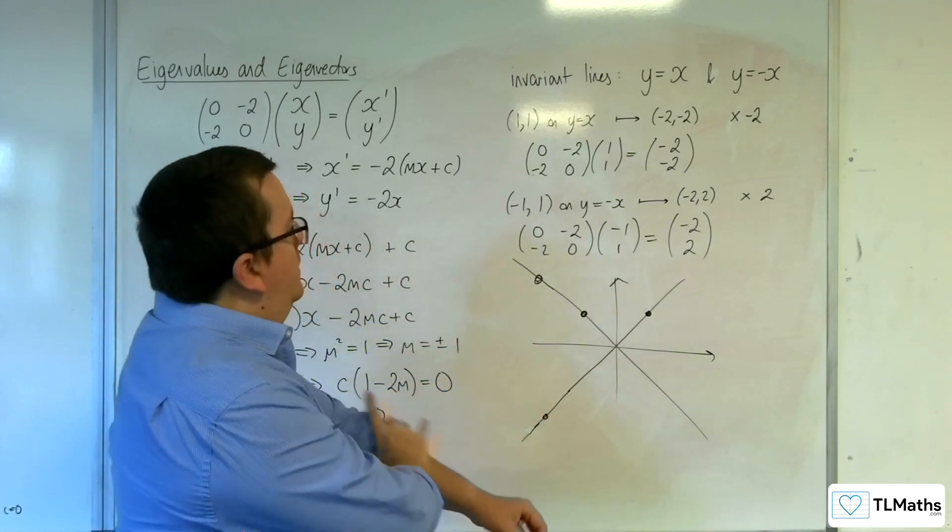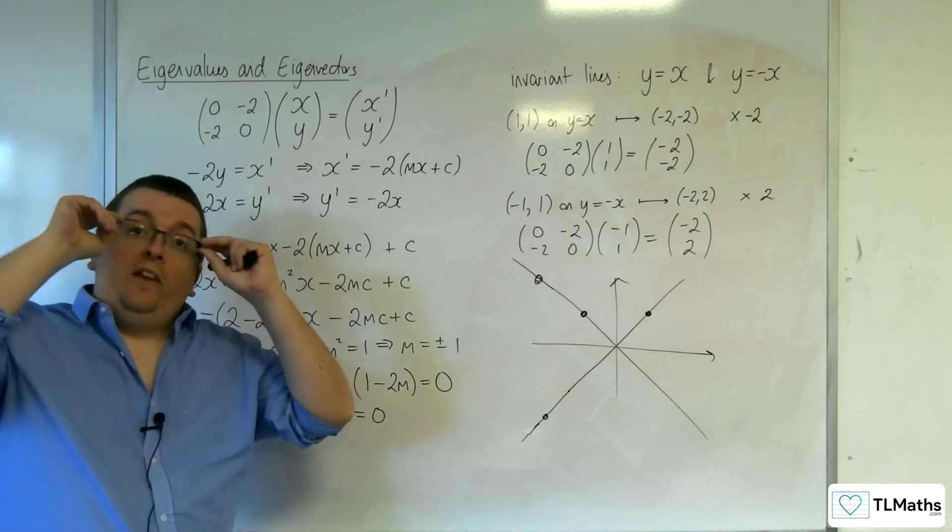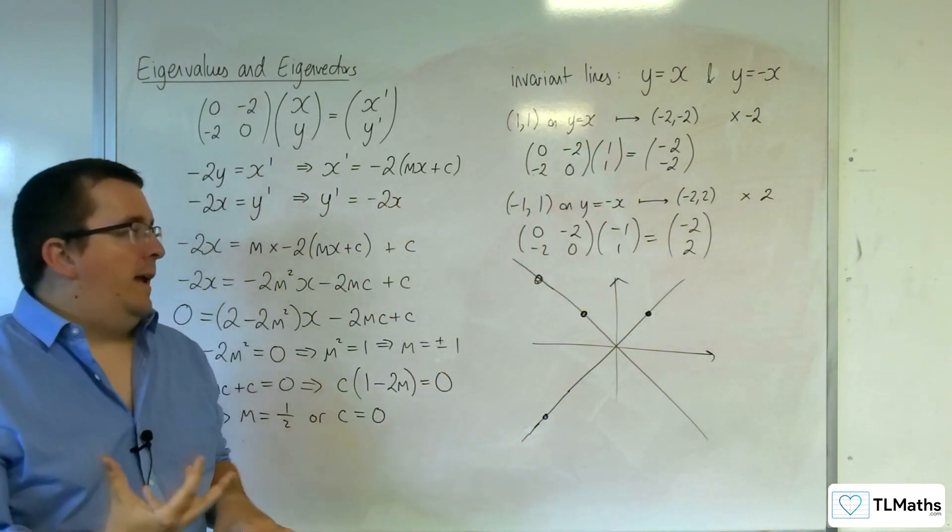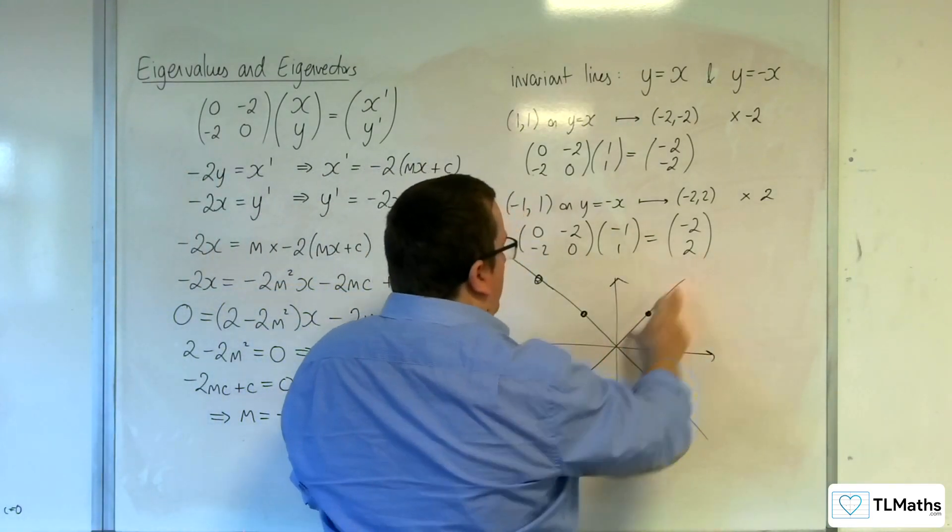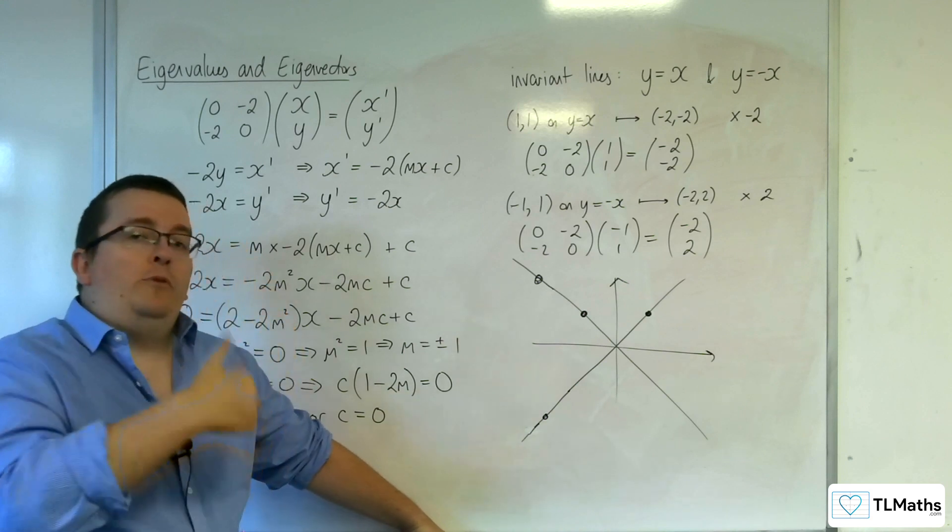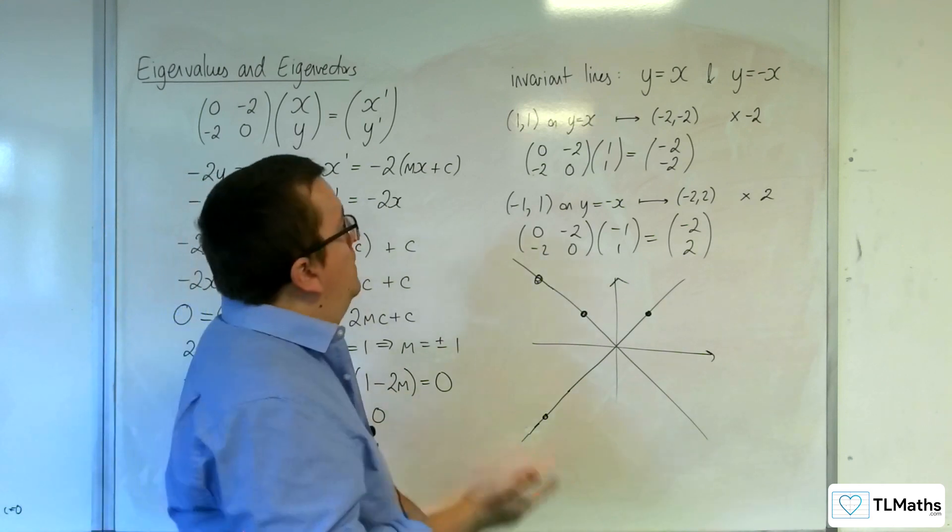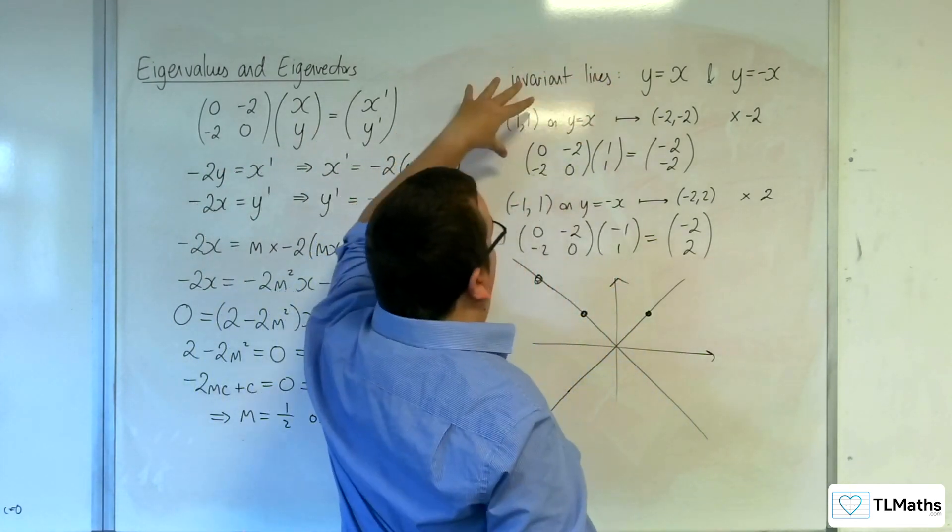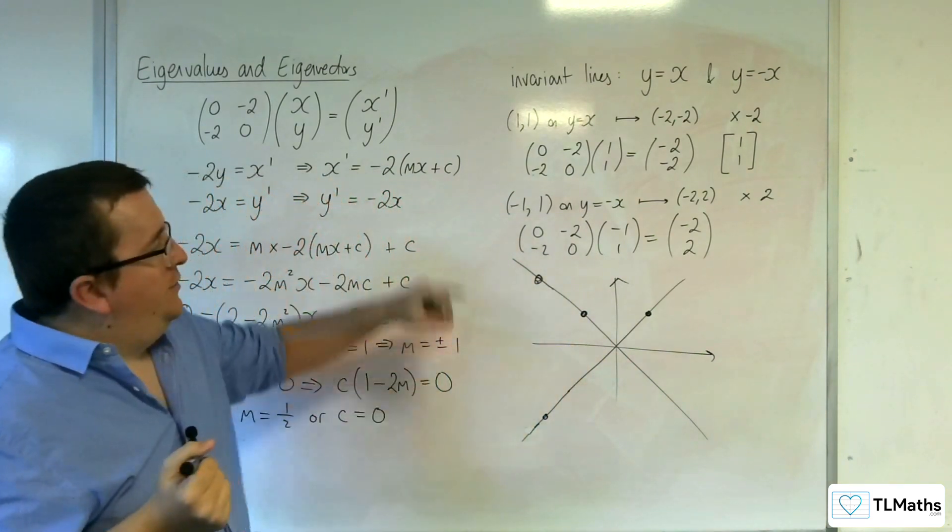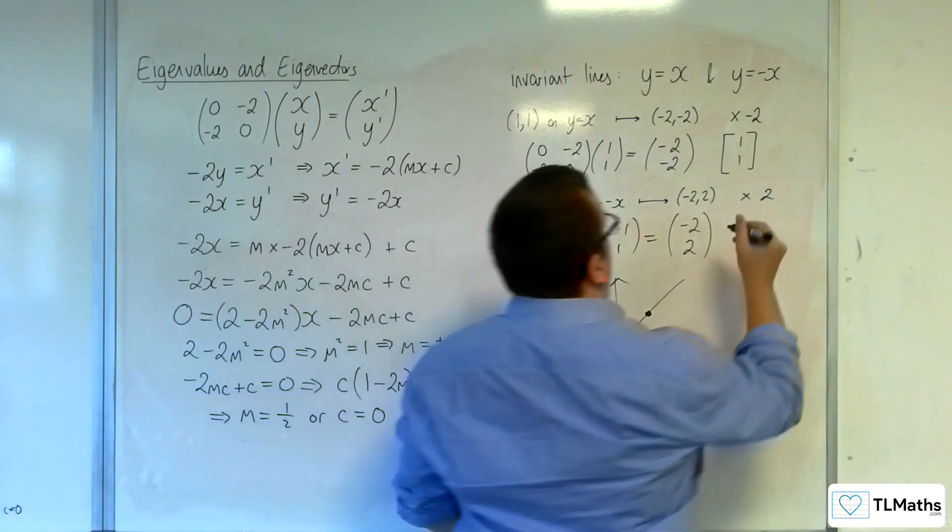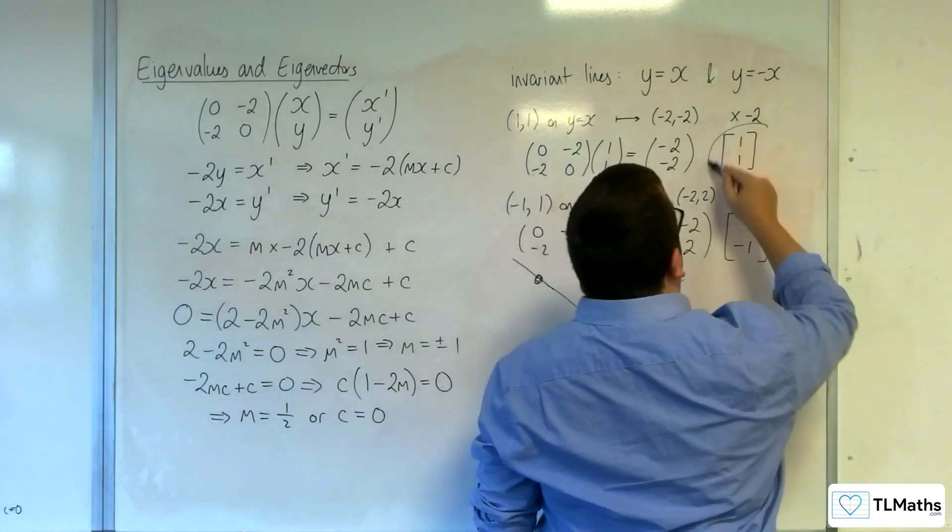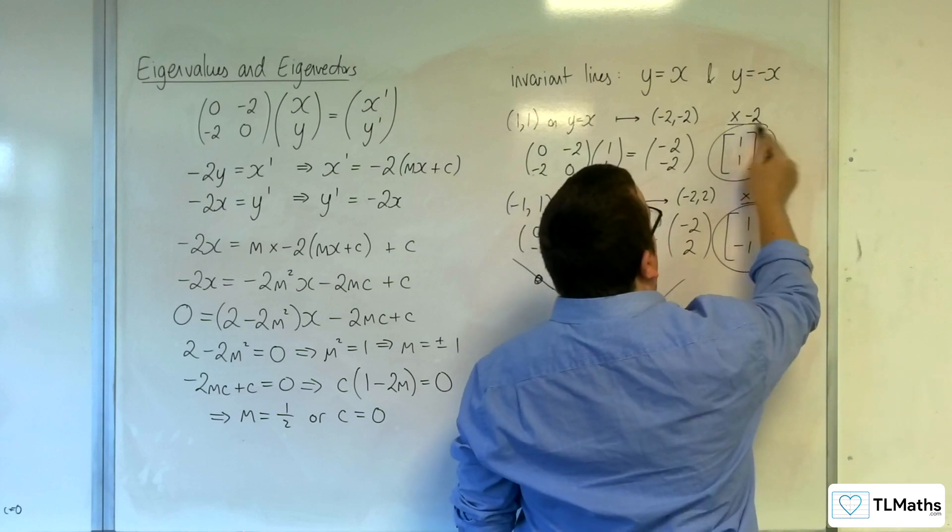Now, the whole idea of what eigenvalues and eigenvectors are is the eigenvalue is precisely these values here, what you're multiplying by. So the eigenvalue tells you the multiplier along your invariant line. The eigenvector is the vector that represents the direction of the invariant line. So for this one, for the y equals x line, the eigenvector would be 1, 1. And the eigenvector for this one would be 1, minus 1. So they would be your eigenvectors. And these would be your corresponding eigenvalues.